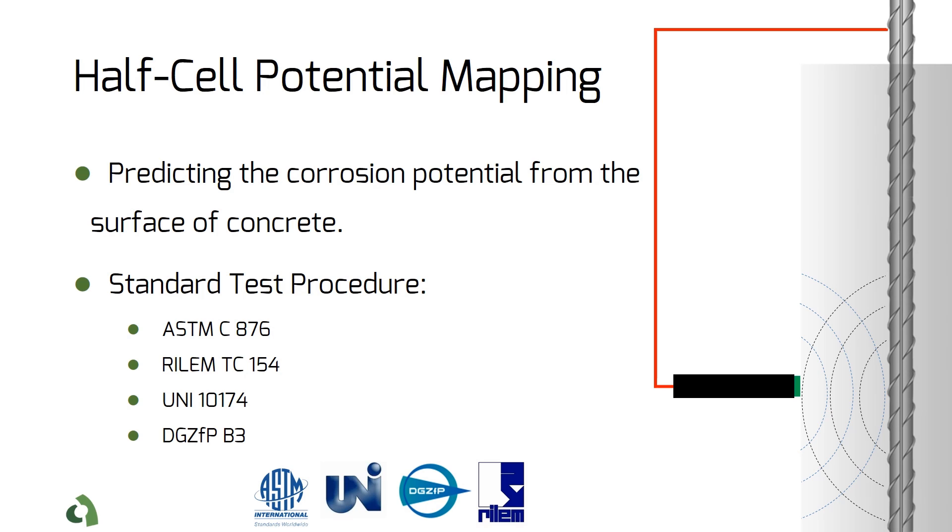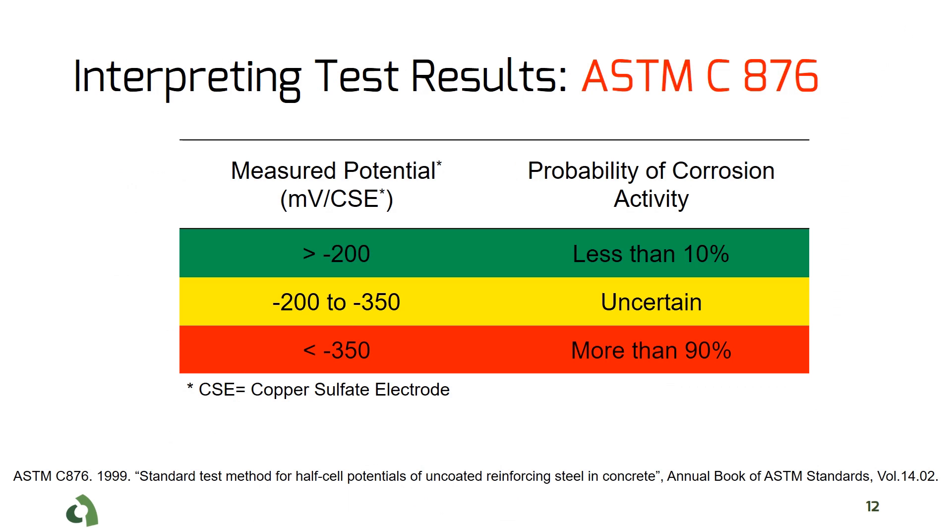The value is normally presented in contour plots, showing different half-cell potential values. This helps identify areas with a higher chance of corrosion.